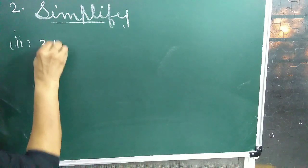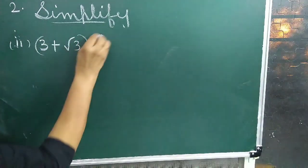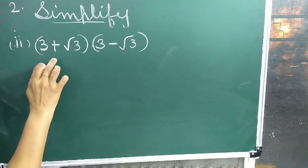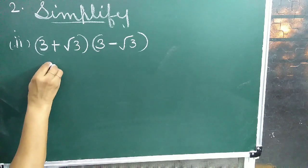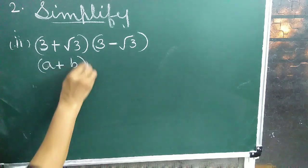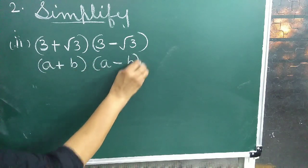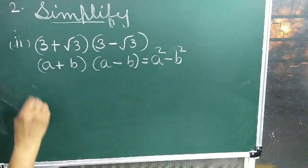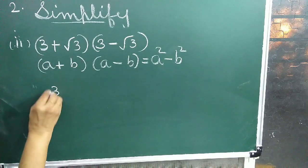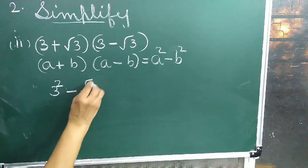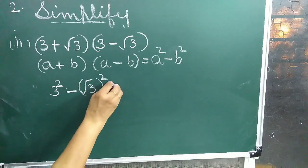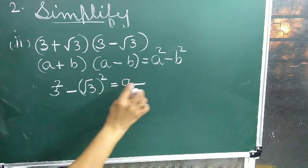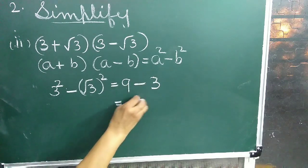Second question: 3 plus root 3 into 3 minus root 3. This is in the form of the third identity, that is a plus b into a minus b, which equals a square minus b square. So we write 3 square minus root 3 whole square, that is 9 minus 3, which equals 6.